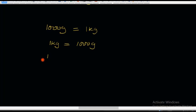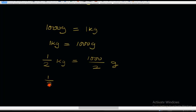1/2 kg means half of a kilogram. Working this out: half kg, that is 1/2 kg, is equal to 1,000 divided by 2, which is 500 grams. So half a kilogram is equal to 500 grams.